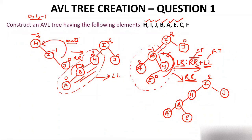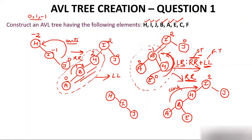LL rotation is clockwise. Rotating clockwise on the full tree: H comes up, I goes to the right, J remains right of I, B goes left of H, A remains left of B, and E goes right of B. Now calculate the balance factors: 0, 0, 0, 0, and others. The balance factor of every node is either 0, 1, or minus 1. The tree is now balanced and is an AVL tree.